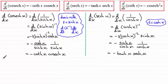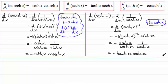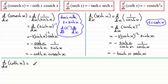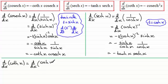Now for this last one, we have to differentiate coth x with respect to x. I know this is 1 over tanh x, but it's not so easy to differentiate it that way. So instead, coth x is cosh x over sinh x, and I'll use the quotient rule here.